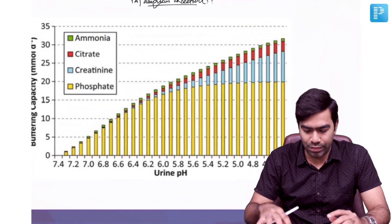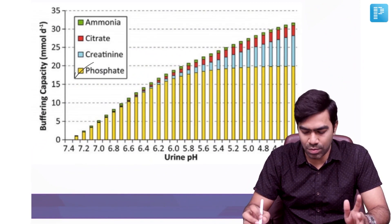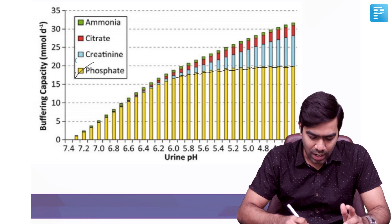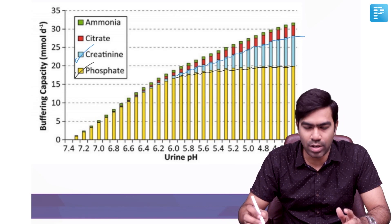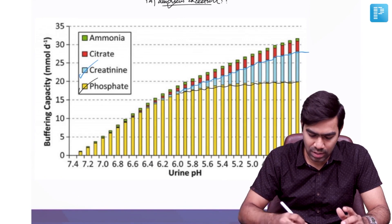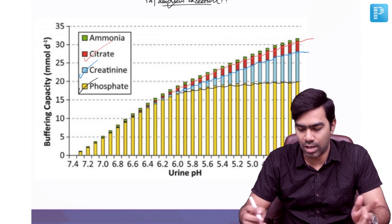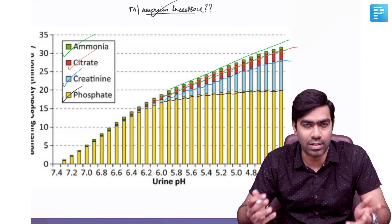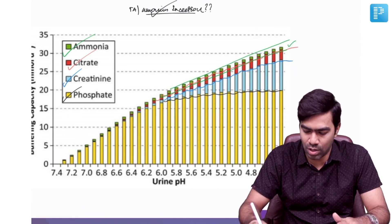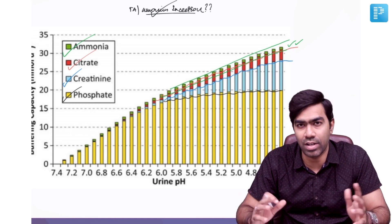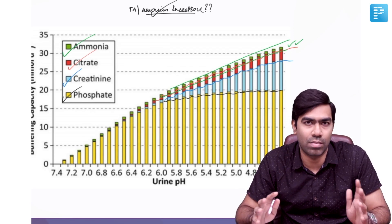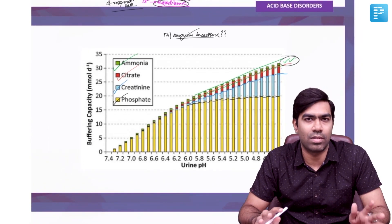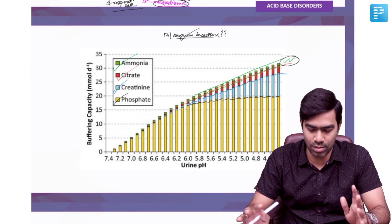A graph illustrates urinary buffering: initially the phosphate buffer is most important, then becomes saturated. The creatinine buffer becomes active at a certain urine pH and keeps increasing before also plateauing. Citrate buffer also plays a role at low urine pH. Finally, ammonium excretion keeps increasing as urine pH drops further, and since the kidneys have essentially infinite capacity to produce ammonia, ammonium production is never the limiting factor — maximum distal nephron H+ secretion of 700 millimoles per day is.